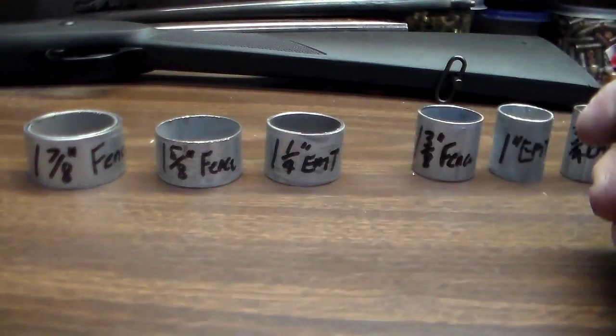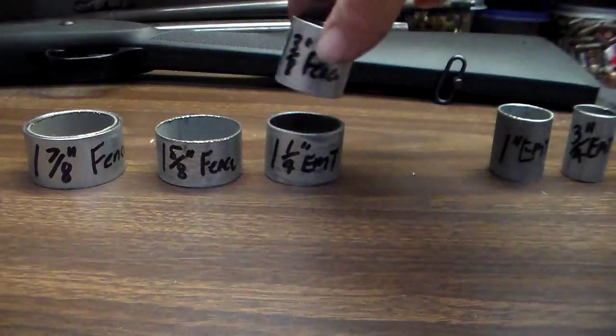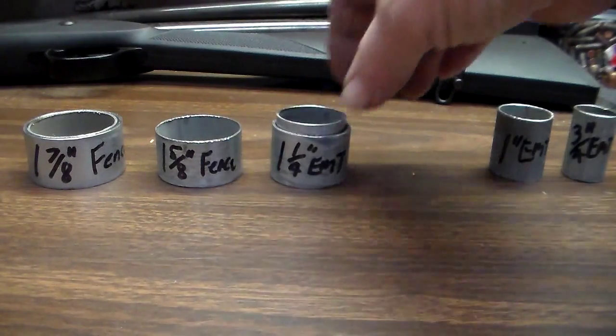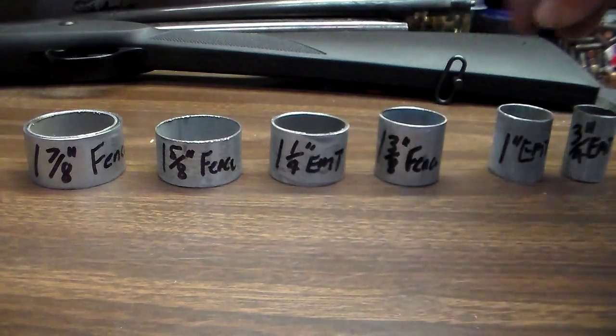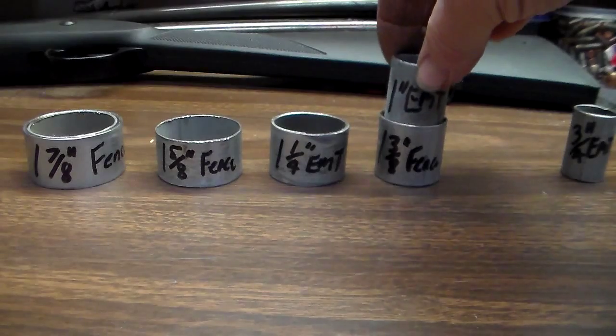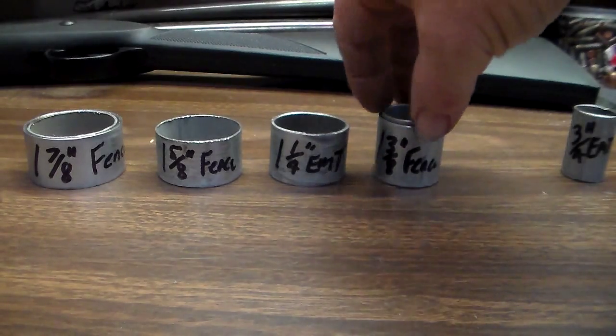And then you can also use the inch and a quarter for a fitting for inch and three-eighths fence pipe. And that fits in there pretty good. And the fitting for the one-inch EMT is made out of inch and three-eighths, which fits right inside just like that.